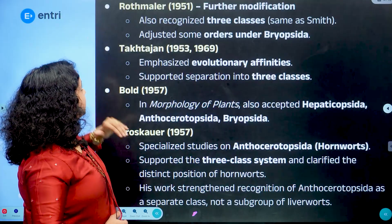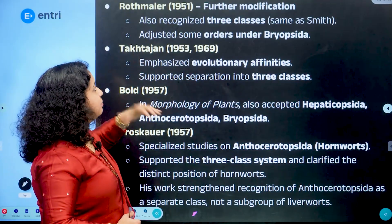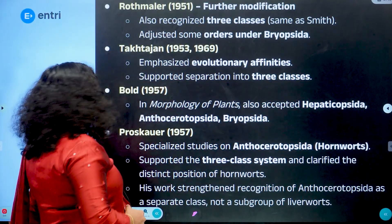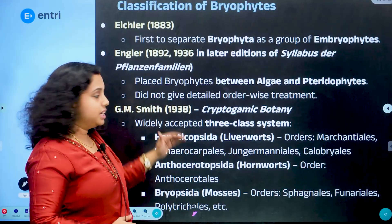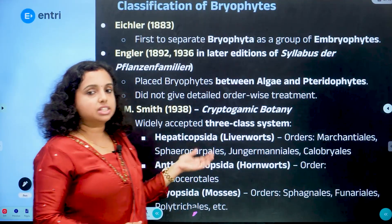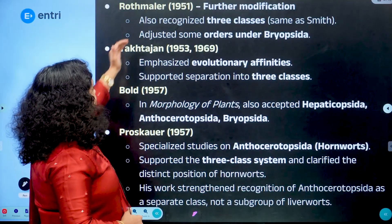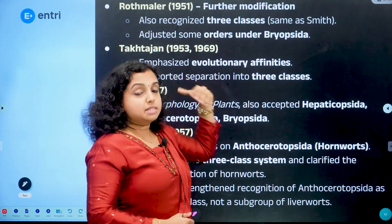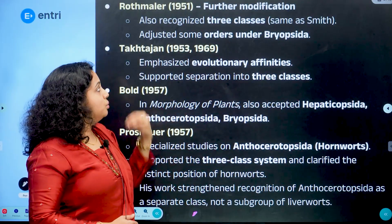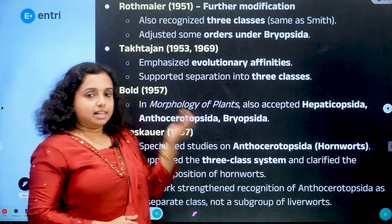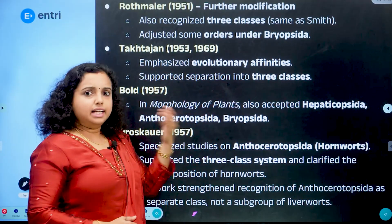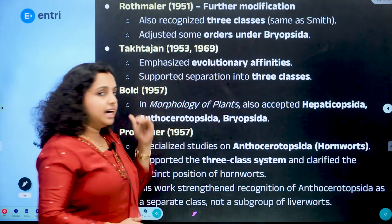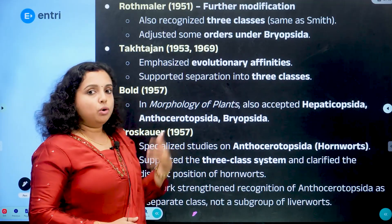The next scientist is Rothmeller. Rothmeller proposed a further modification of Smith's classification. He also recognized the same three classes but made rearrangements and adjustments of some orders under Bryopsida.